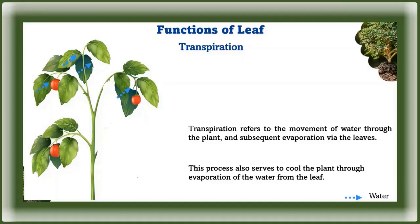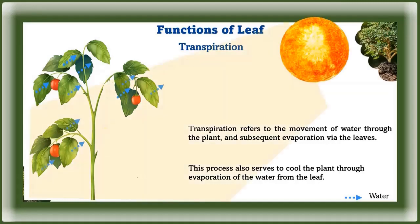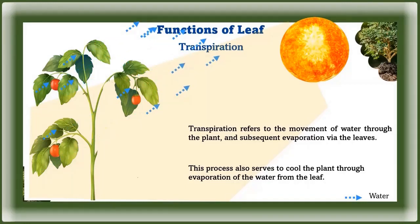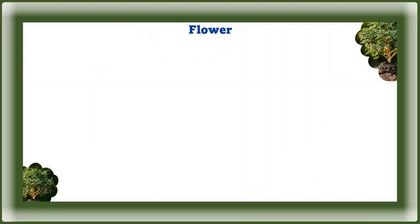Transpiration refers to the movement of water through the plant and subsequent evaporation via the leaves. When the stomata open to accommodate the diffusion of carbon dioxide into the plant for photosynthesis, water flows out. This process also serves to cool the plant through evaporation of water from the leaf.